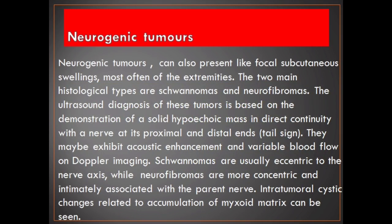Neurogenic tumors can also present as focal subcutaneous swellings, most often of the extremities. The two main histological types are schwannomas and neurofibromas. The ultrasound diagnosis of these tumors is based on the demonstration of a solid hypoechoic mass in direct continuity with a nerve at its proximal and distal ends. They may exhibit acoustic enhancement and variable blood flow on Doppler imaging. Schwannomas are usually eccentric to the nerve axis, while neurofibromas are more concentric and intimately associated with the parent nerve. Intratumoral cystic changes related to accumulation of myxoid matrix can be seen.